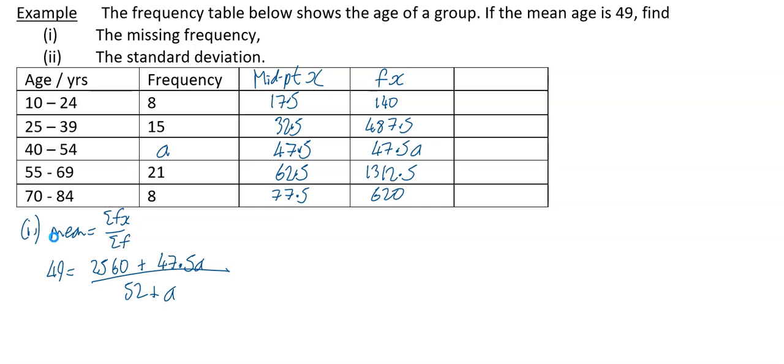What you can then do is multiply across by the denominator, so that 49 gets multiplied by 52 plus A, which is going to give you 2548 plus 49A equals 2560 plus 47.5A. Bring all the A's to one side, so 49A minus 47.5A is 1.5A, and then you'll have 2560 minus 2548, which is 12. A little bit of working out then gives you A equals 12 divided by 1.5, which gives you A equals 8.